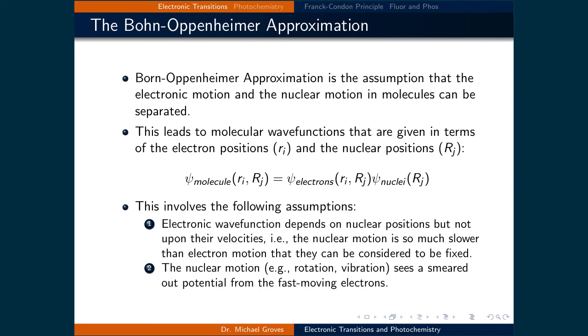This involves the following assumptions: that the electronic wave function depends on nuclear positions, but not upon their velocities, meaning that nuclear motion is so much slower than electronic motion that they can be considered to be fixed. And that the nuclear motion, being rotation and vibration, sees a smeared-out potential from the fast-moving electrons. Because of these assumptions, we can treat electronic and vibrational effects separately.